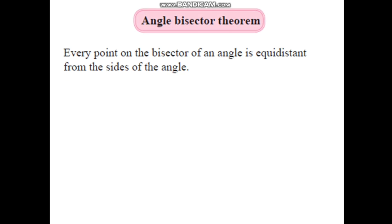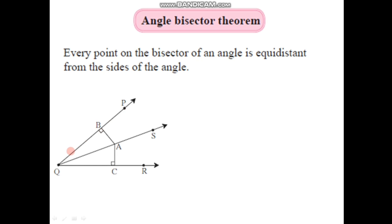Let us illustrate this with the help of a diagram. Angle PQR is the angle given here, and ray QS is the angle bisector of angle PQR. There is any point A on the ray QS. We have drawn segment AB perpendicular to ray PQ and segment AC perpendicular to ray QR. These perpendiculars represent the distances of point A from the respective sides PQ and QR.